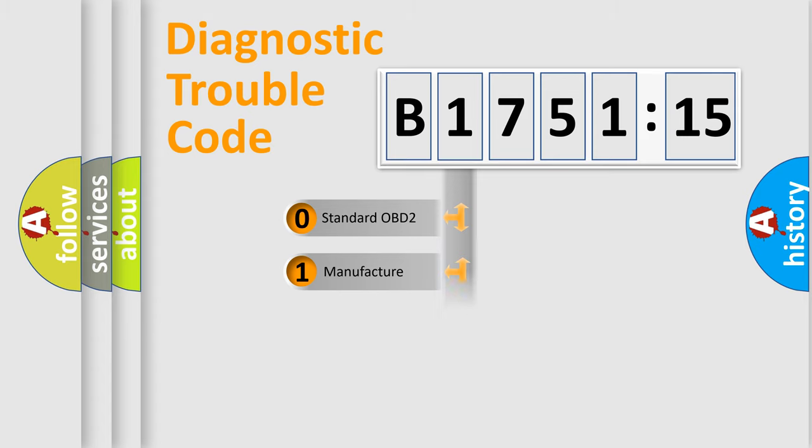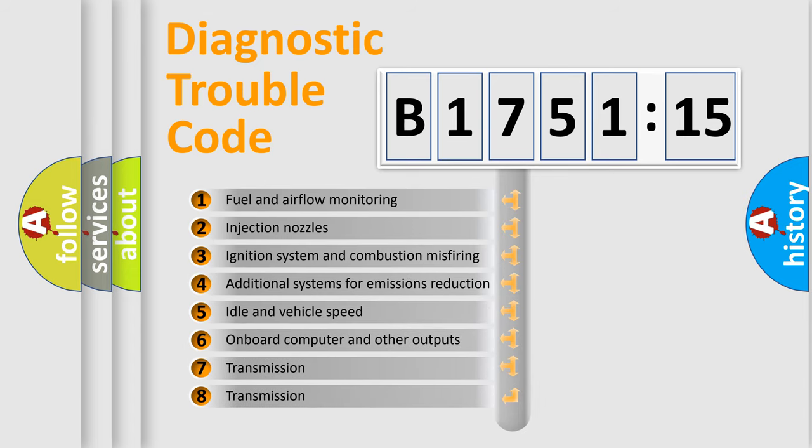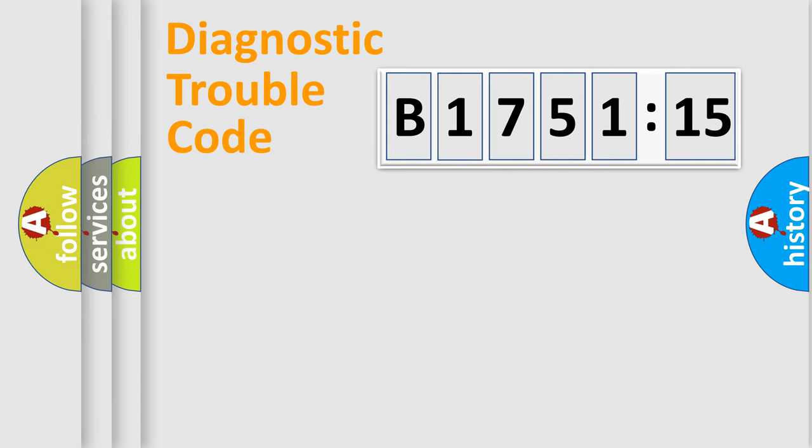If the second character is expressed as zero, it is a standardized error. In the case of numbers 1, 2, 3, it is a car-specific error. The third character specifies a subset of errors. The distribution shown is valid only for the standardized DTC code. Only the last two characters define the specific fault of the group.